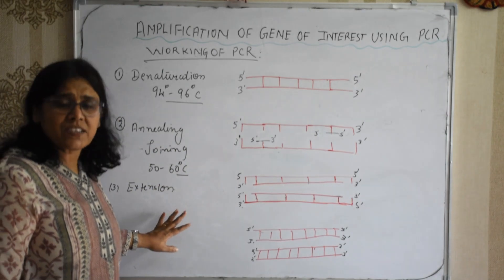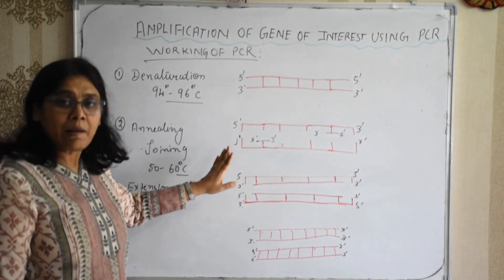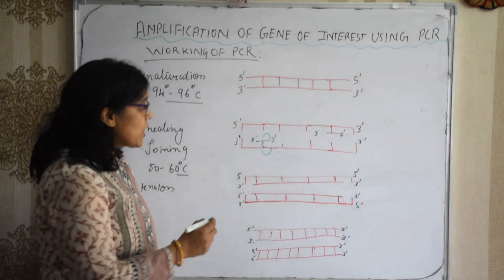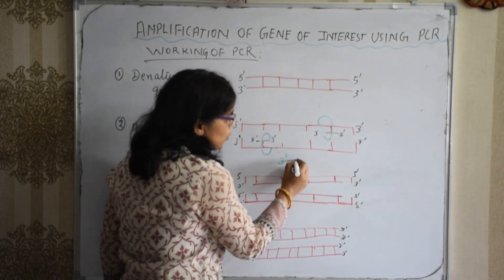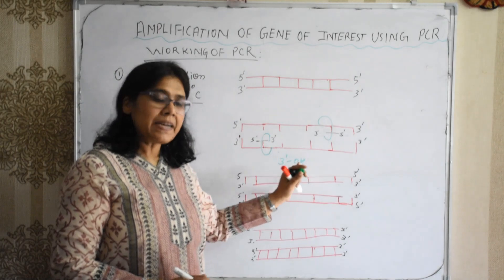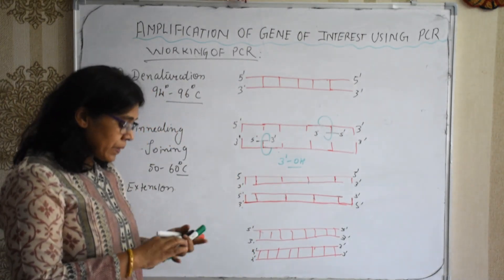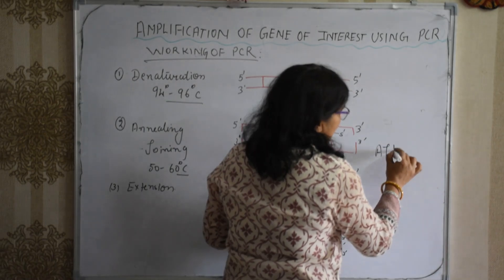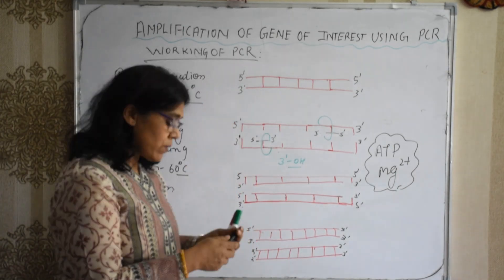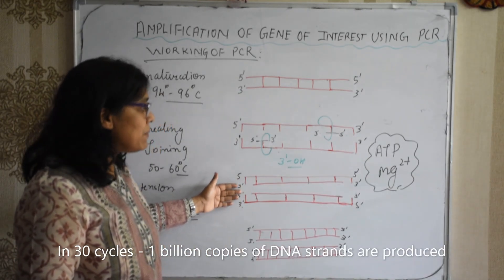After annealing, the next step is primer extension, also called polymerization. With the help of polymerase enzyme, nucleotides are added at the three-prime OH end of the primer. New nucleotides are simultaneously joined and a new strand of DNA is synthesized with the help of ATP and magnesium ions. This step is carried out at a temperature of 72 degrees centigrade.